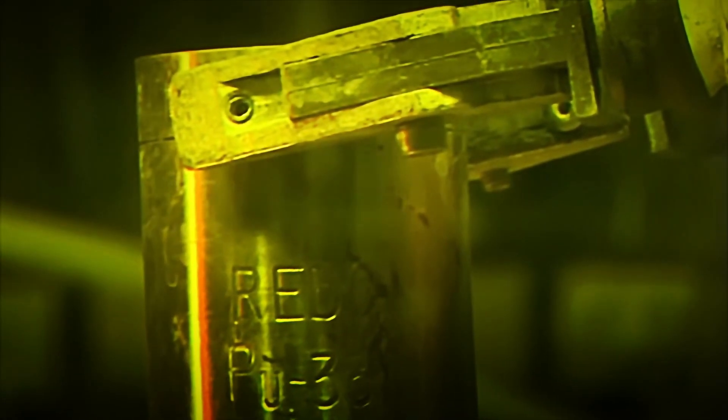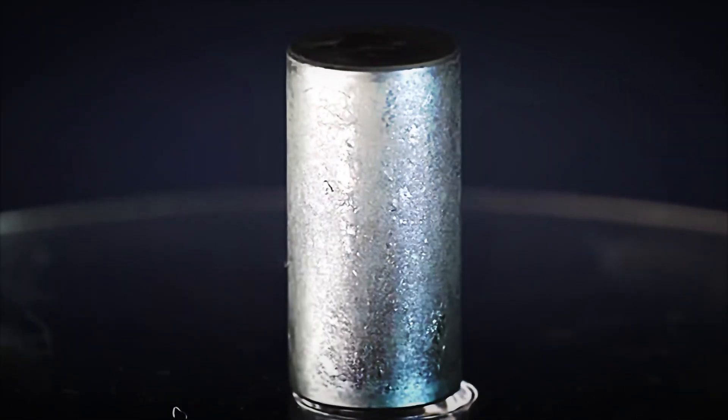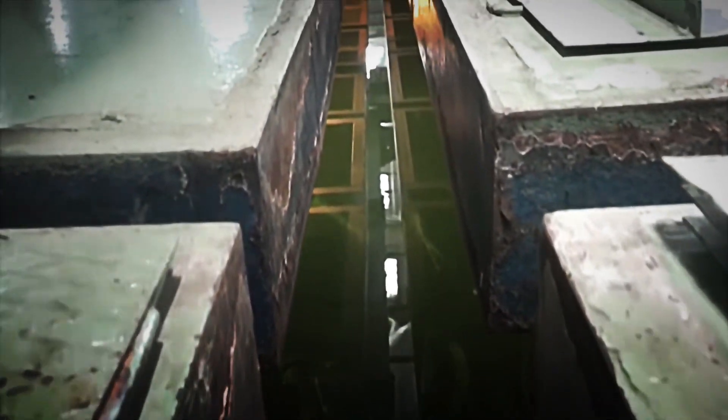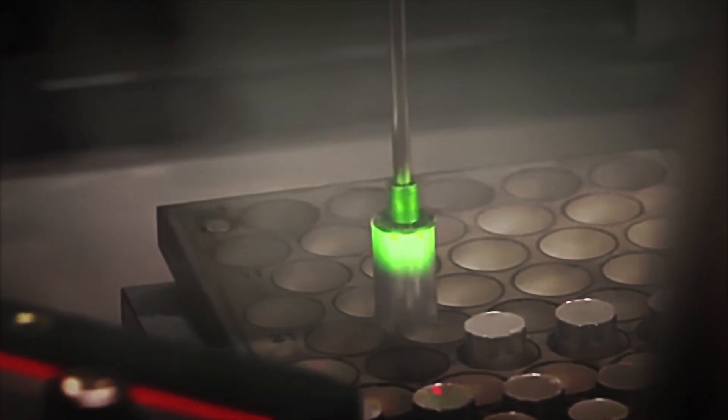The next step is a complex chemical process. First, the aluminum is dissolved in sodium hydroxide solutions. Then, using nitric acid, the neptunium oxides are separated from the plutonium oxides. Finally, using ion exchange resin columns, the plutonium-238 is retained and purified with an efficiency of over 95%.